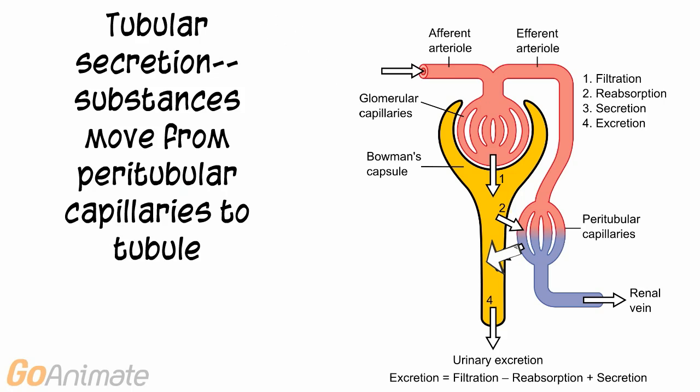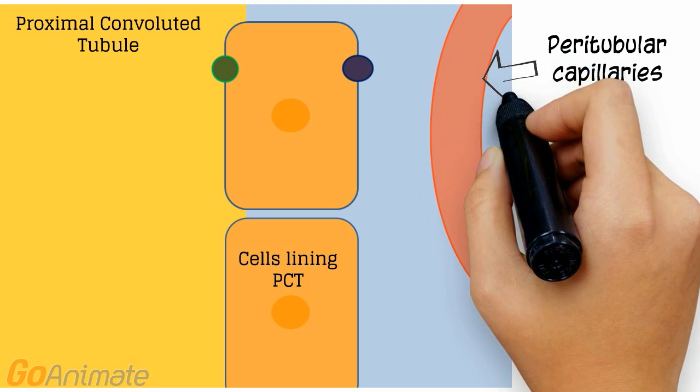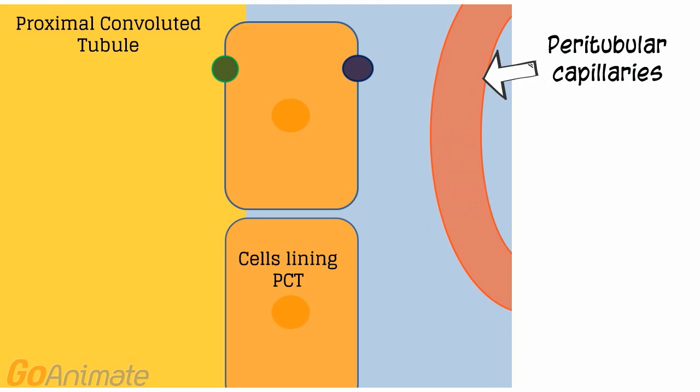Let's take a closer look at how this happens. Here we see a diagram of a kidney tubule along with the cells lining it, the interstitium, and the peritubular capillaries.